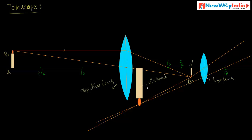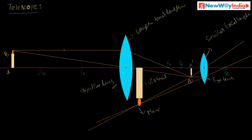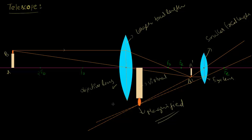So, the telescope has two lenses — one is the objective lens and another one is the eye lens. The objective lens has a larger focal length and the eye lens has a smaller focal length. The final image is virtual and highly magnified. The telescope is used to study the surface features of the moon and planets, and it is used to study distant objects like stars, comets, and so on.